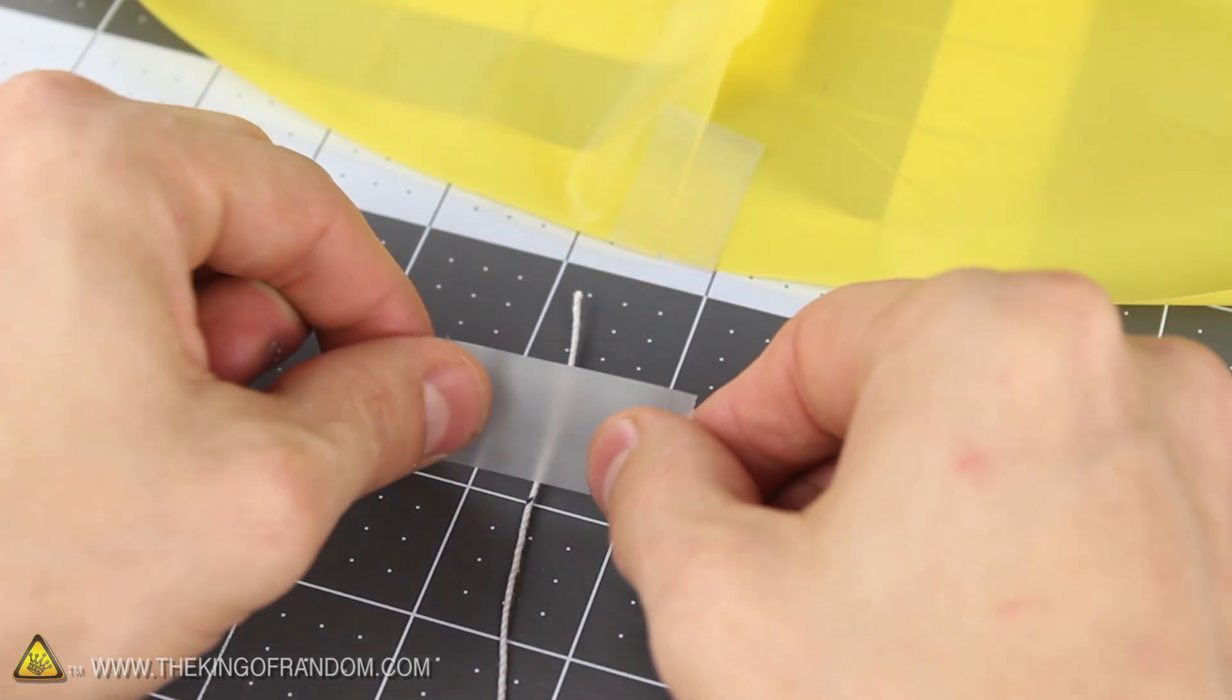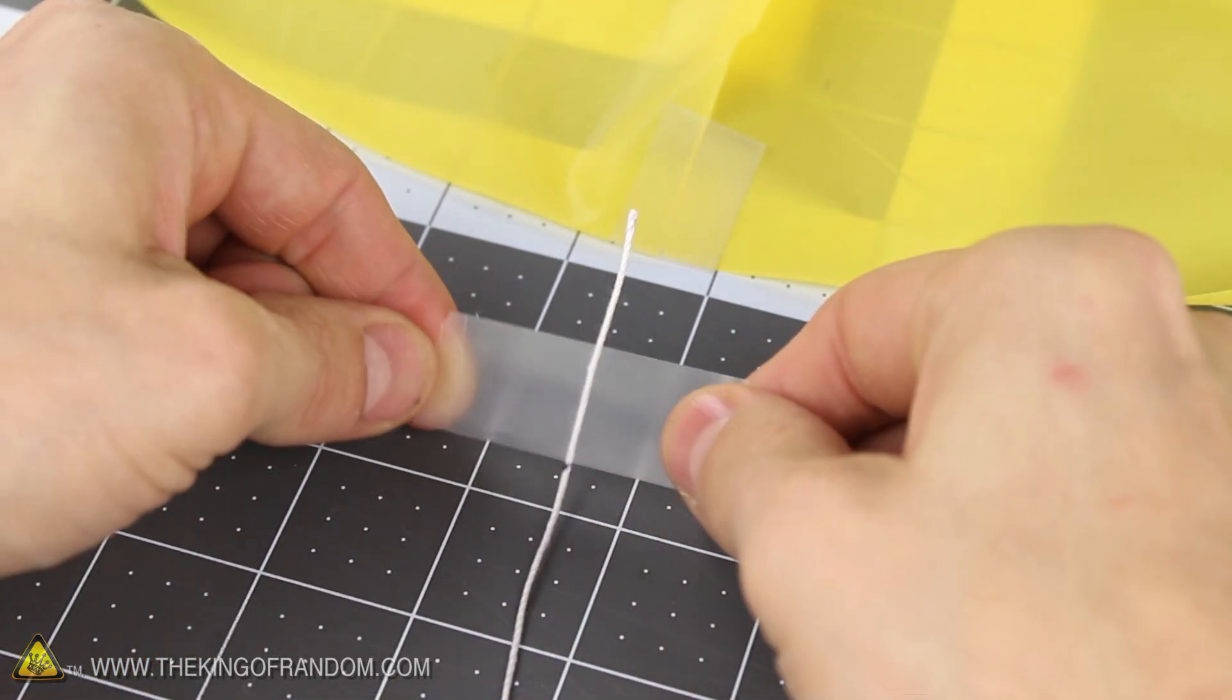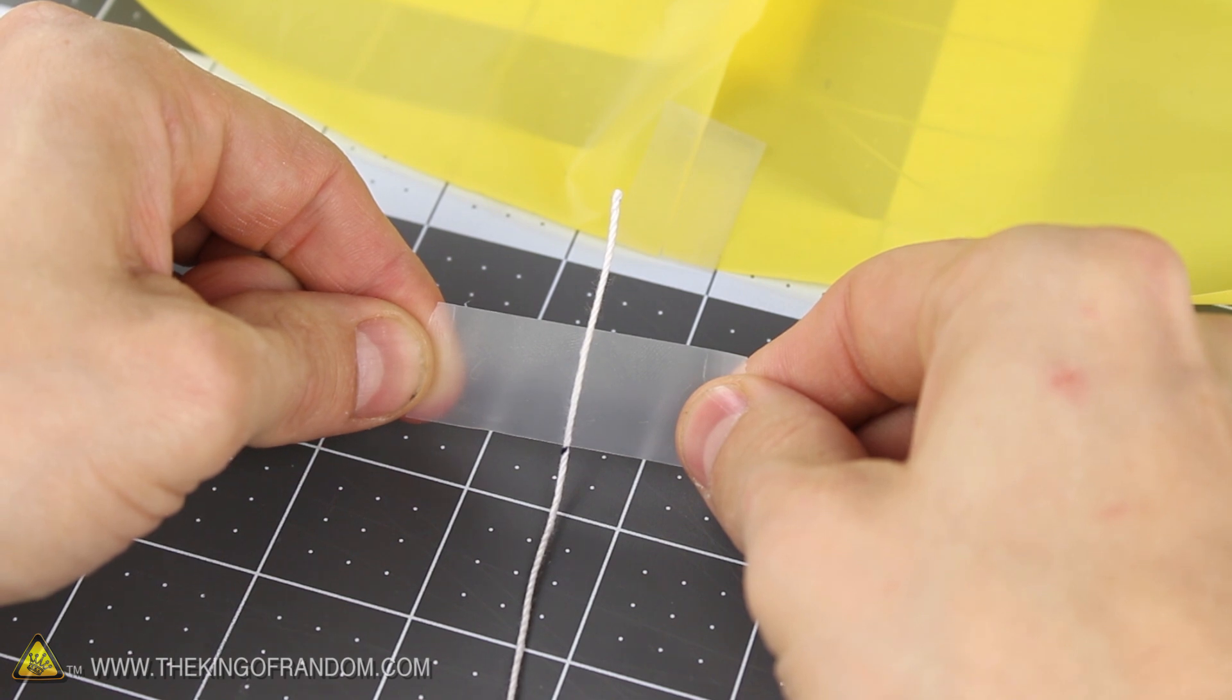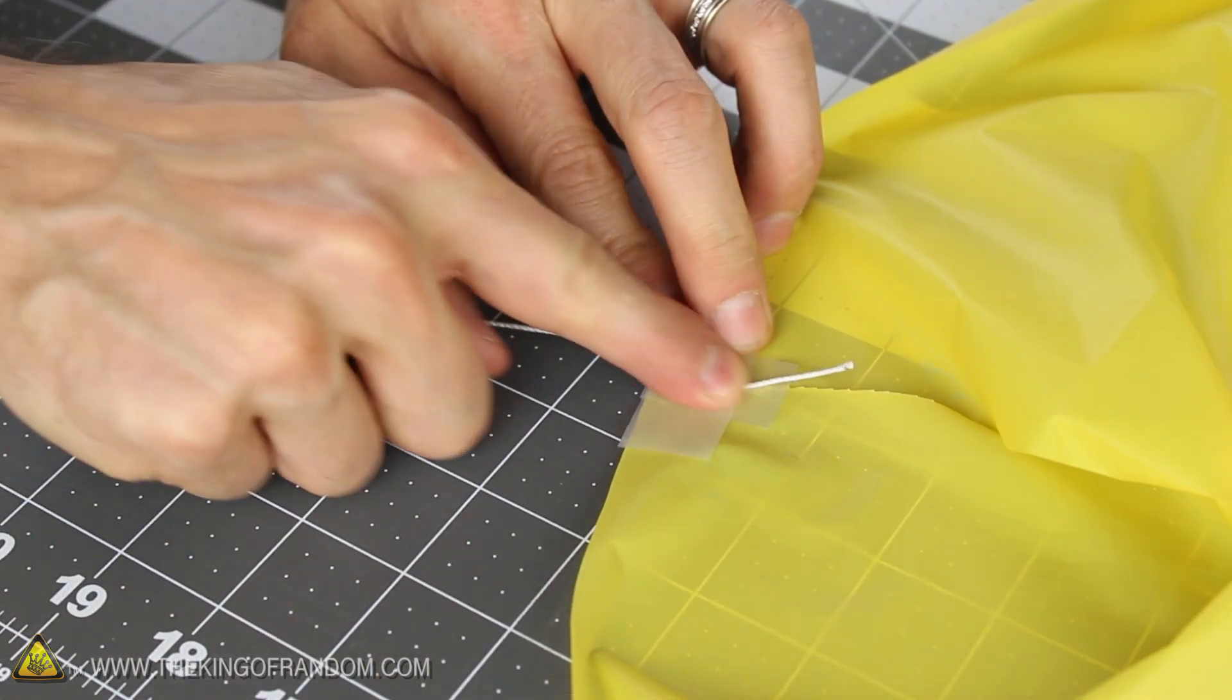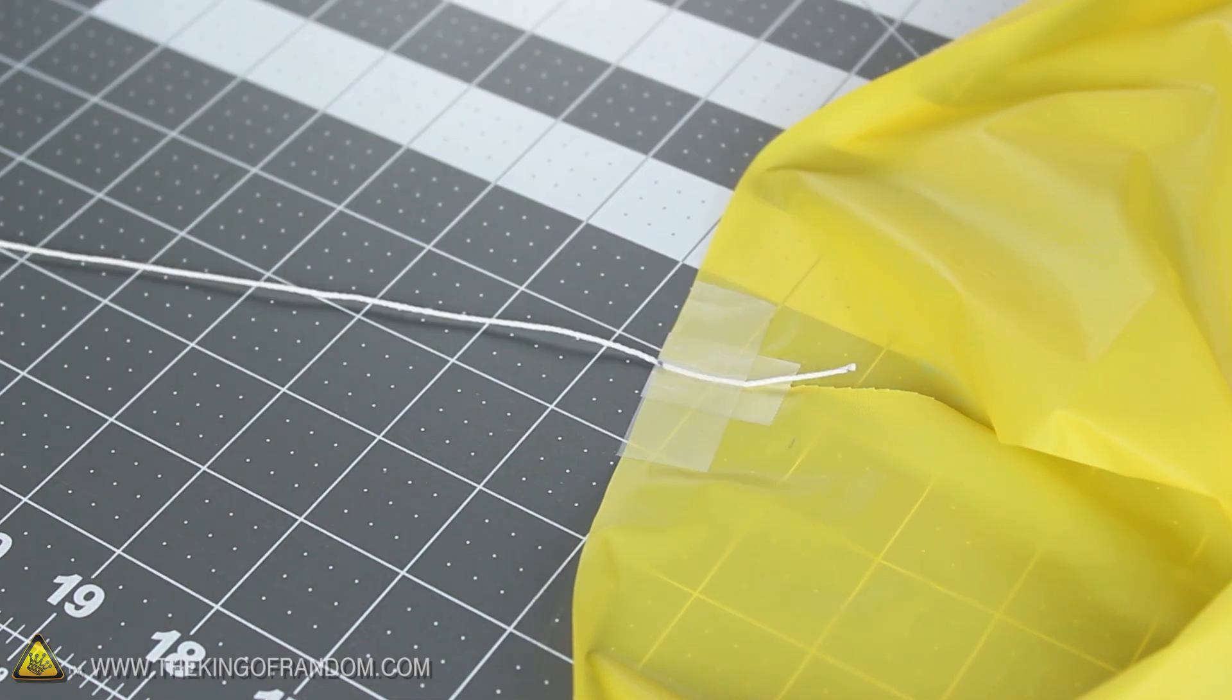Now to attach the lines to the parachute, we'll need to cut a small piece of tape and press it onto the string so the bottom of the tape lines up with the mark. Then attach the string to the inside of the parachute by pressing it flat to the plastic cloth, making sure the mark lines up at the very bottom.